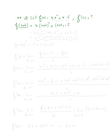Now we need to FOIL x plus h squared. Let's use the identity because it's so easy. Using the identity a plus b squared equals a squared plus two ab plus b squared, this means that x plus h squared equals x squared plus two x h plus h squared. So we have four times that quantity, plus x plus h minus five.